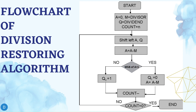Step 3: The content of register M is subtracted from A and the result is stored in A. Step 4: The most significant bit of A is checked. If it is 0, the least significant bit of Q is set to 1. Otherwise, if it is 1, the least significant bit of Q is set to 0 and the value of register A is restored — that is, the value of A before the subtraction with M. Step 5: The value of counter N is decremented. Step 6: If the value of N becomes 0, we exit the loop. Otherwise, we repeat from Step 2.